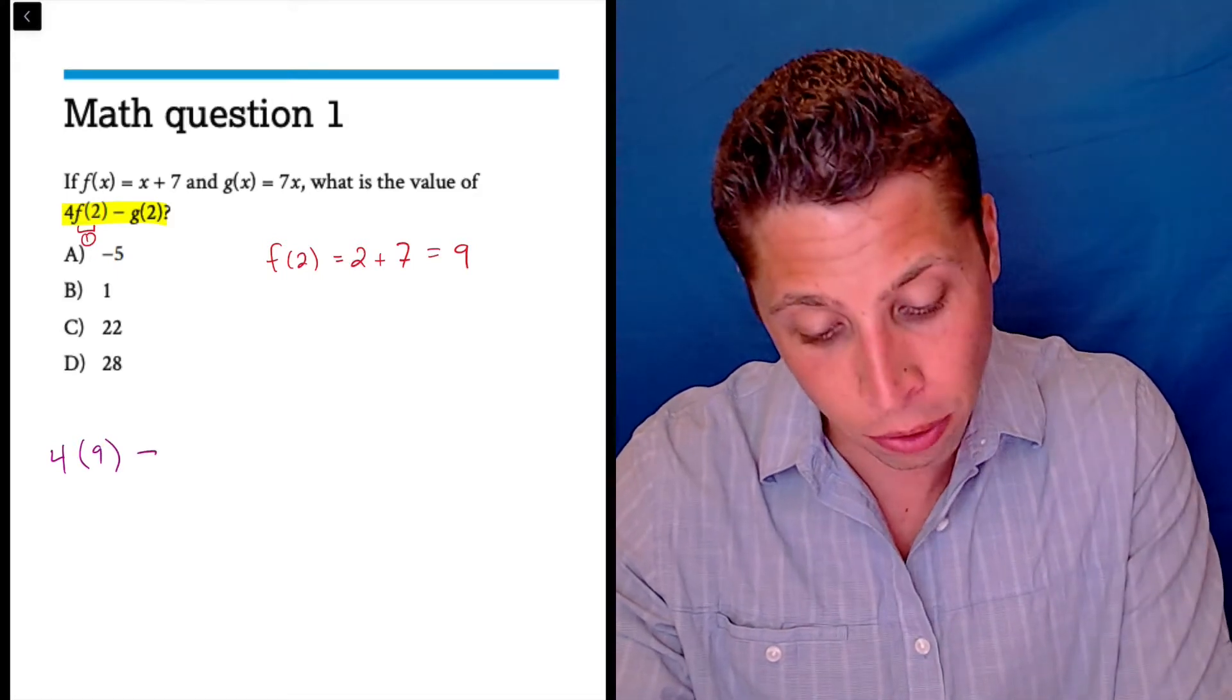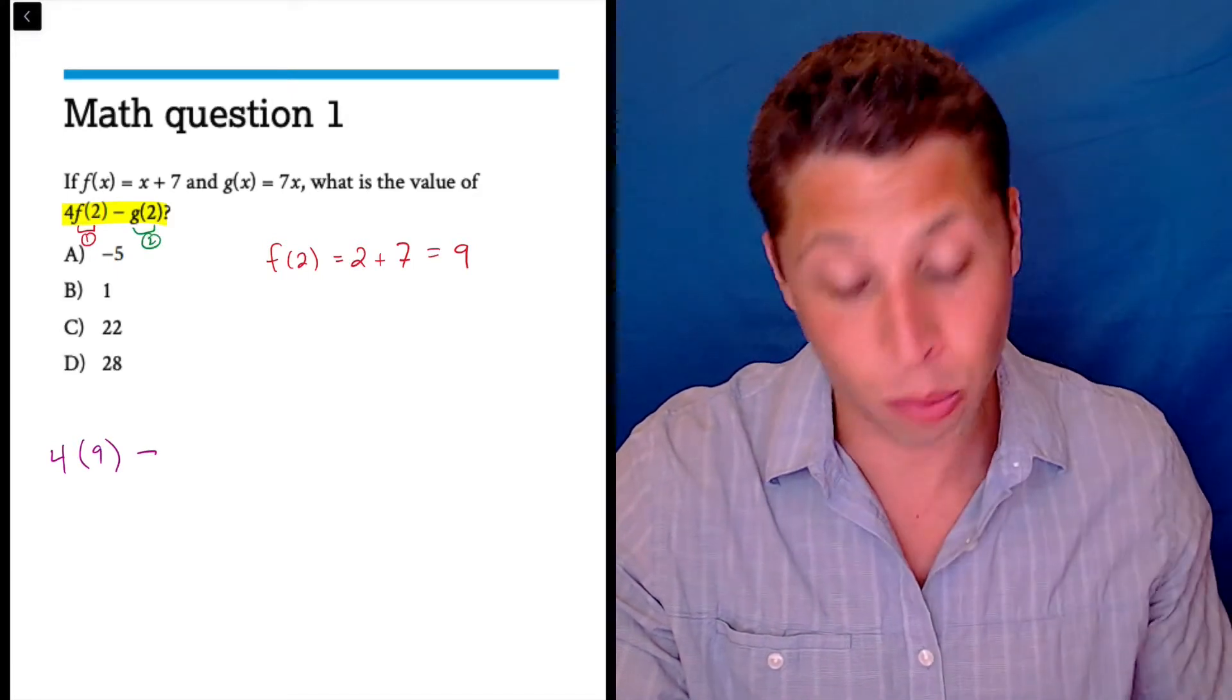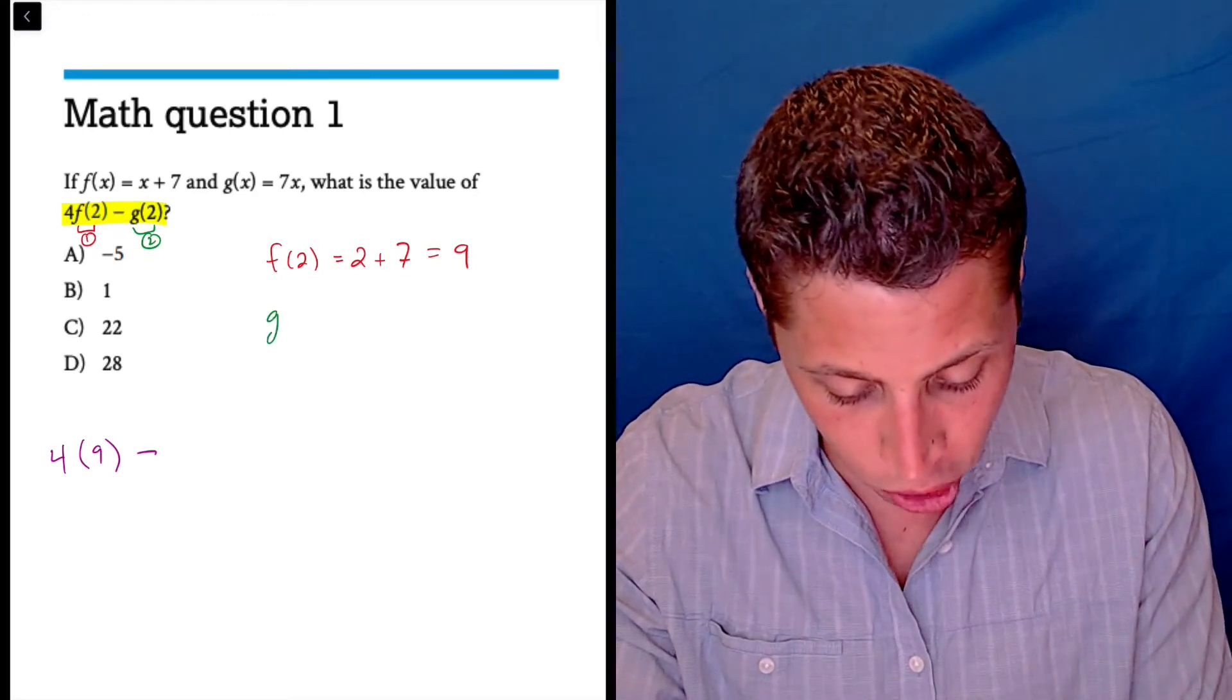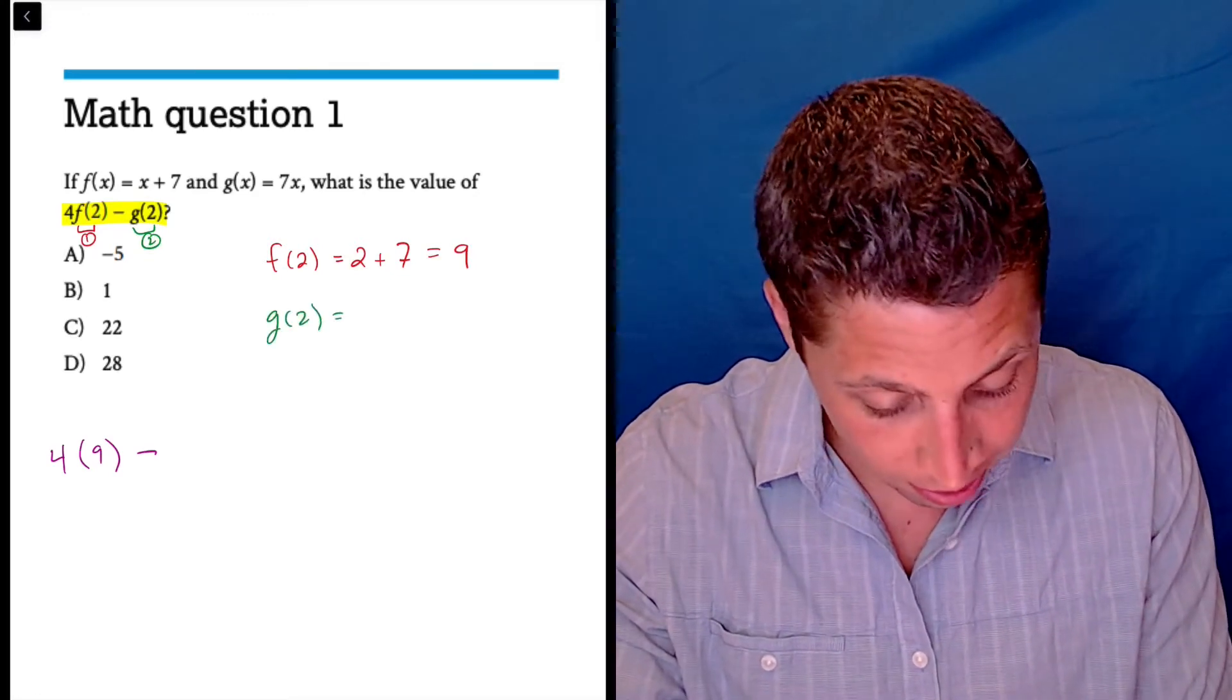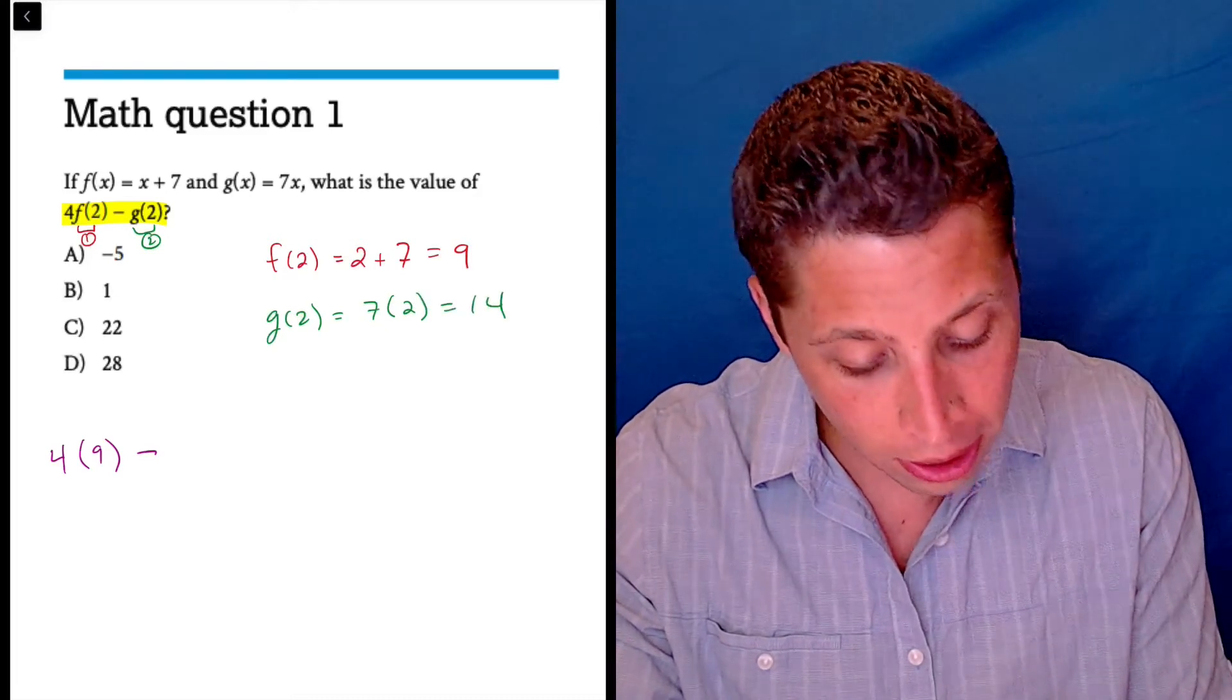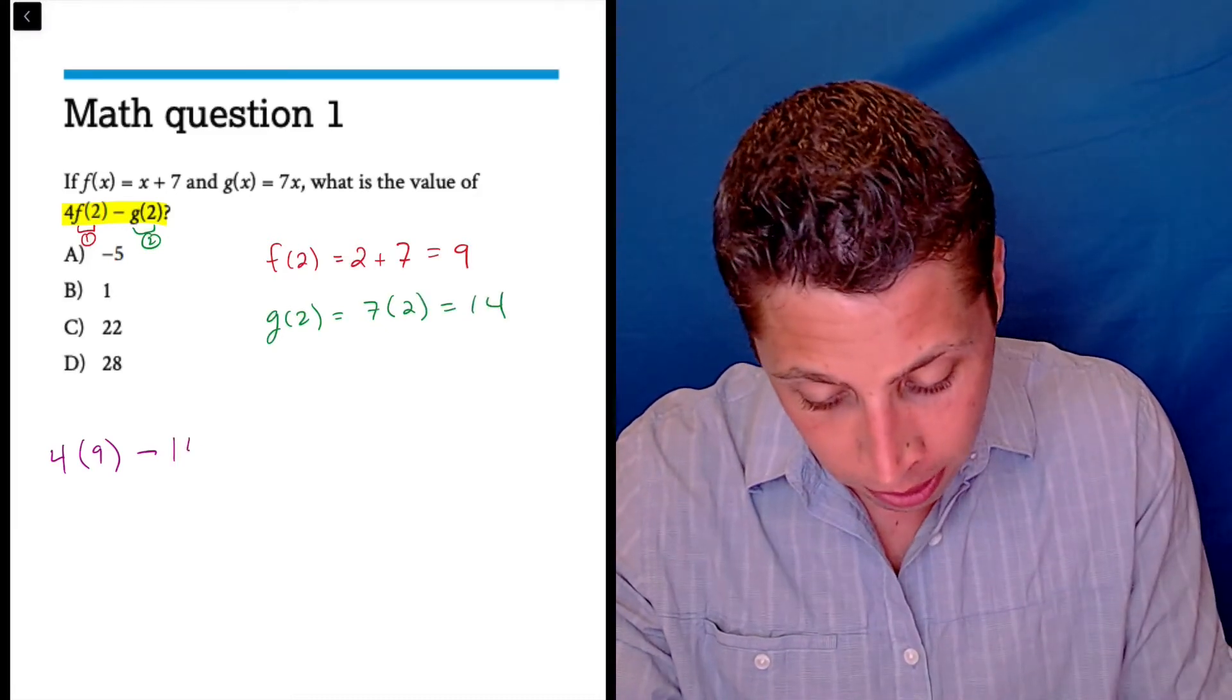Let's get that g of two, right? That's the next step that we should do here is we should follow that instruction. So g of two is seven times two, and that's 14. So that's going to go in here for the g.